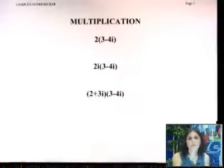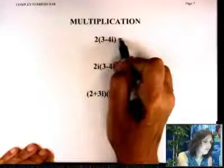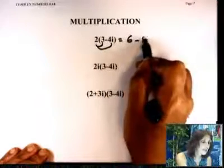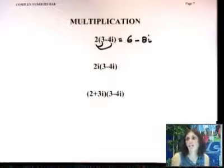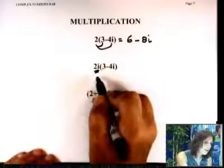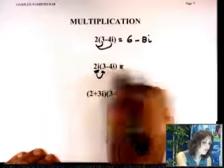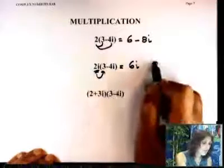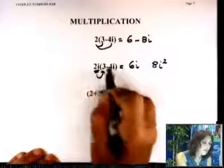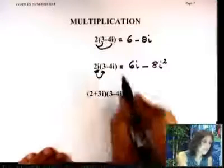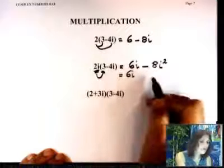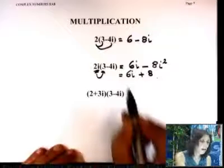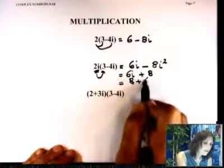How do you multiply complex numbers? With a real monomial, just distribute: 2 times 3 is 6, 2 times 4i is 8i. When the monomial is imaginary, like 2i times (3 + 4i): 2i times 3 is 6i, 2i times 4i is 8i², and since i² = -1, that becomes positive 8. So the result is 8 + 6i, writing the real part first.